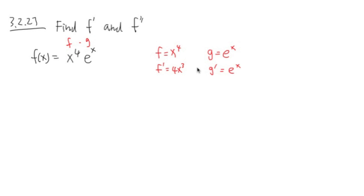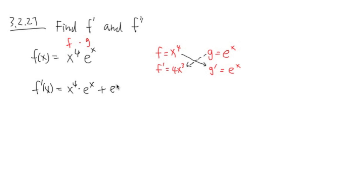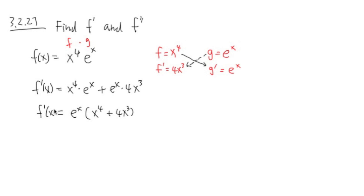That's like the best thing in the world. Now I'm going to pair things up and get my first derivative. f prime of x is going to be x to the fourth times e to the x, plus e to the x times 4x to the third power. Notice that they both have e to the x, so I can factor out e to the x: parenthesis x to the fourth power plus 4x to the third power. And this is my first derivative.